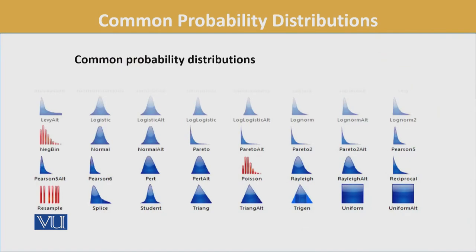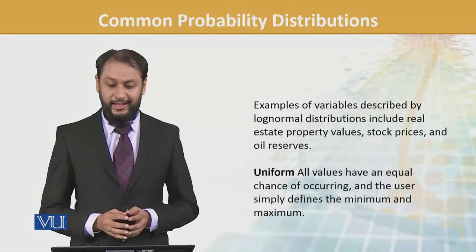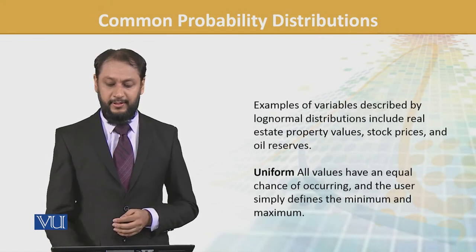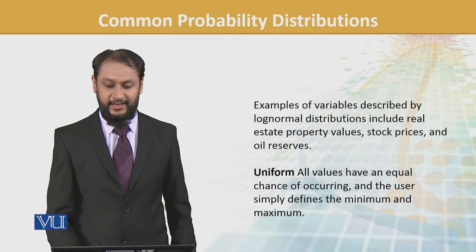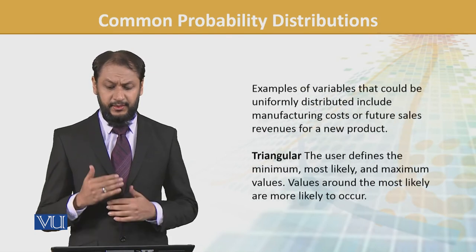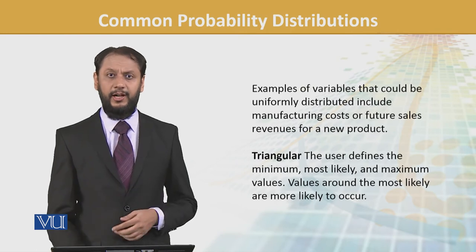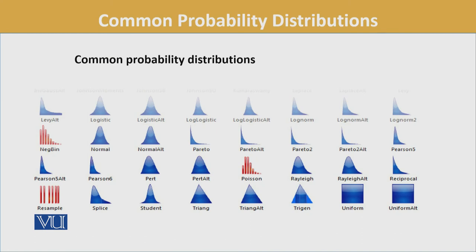Uniform — zaraa table par jaake dekhen, it's table one, it's a block. Uniform mein all values have an equal chance of occurring, and the user simply defines a minimum and maximum — woh aapko path deke usme se reflect karvata hai. Yeh zyada use hoti hai in manufacturing costs and sales.